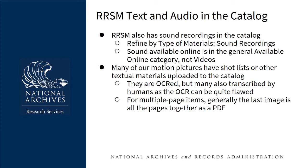RRSM also has motion picture-related text and audio in the catalog. Our sound recordings can be found under 'Refine by type of materials — sound recordings.' For ones available online you will not find them under the videos field but in the general 'available online' category. Our sound recordings include standalone materials like speeches and radio programs, but also audio associated with film either as a soundtrack or wild sound that has since become separated from the images. A lot of the sound collections are not described at the item level in the catalog, so sound is in general hard to work with in films.